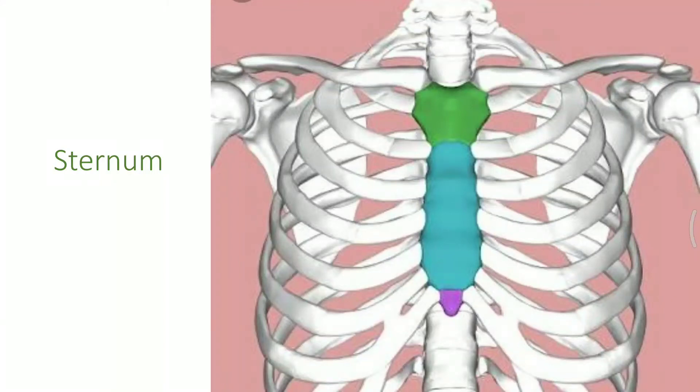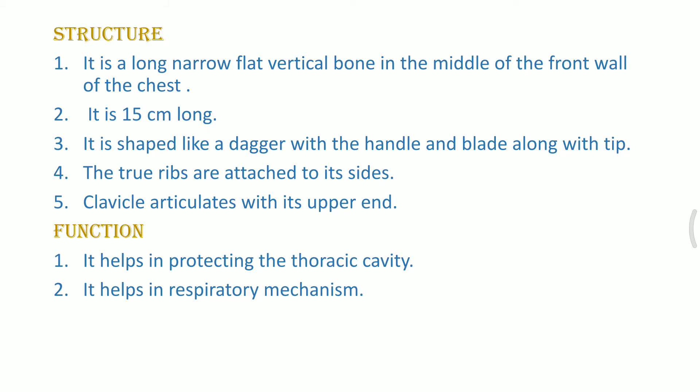The entire colored part which is visible is known as the sternum. It is a main supportive system for the entire thoracic cavity or the ribs. This entire structure has three parts: one part is dark green in color, the second part is the body which is blue in color, and the tail or tip part is purple in color.